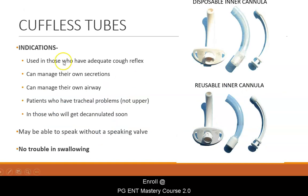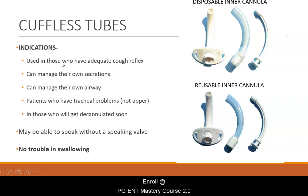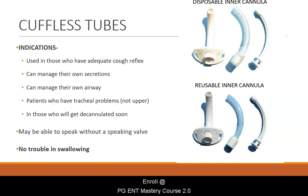Cuffless tubes are indicated in those who have adequate cough reflex, can manage their own secretions, can manage their own airway, those who have tracheal problems with no problem in the upper airway, and in those who will get decannulated soon.